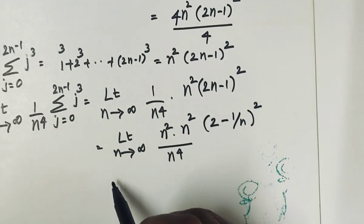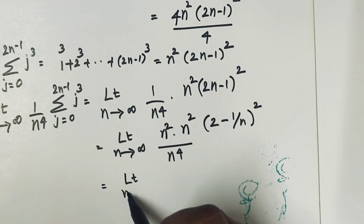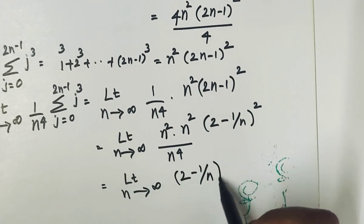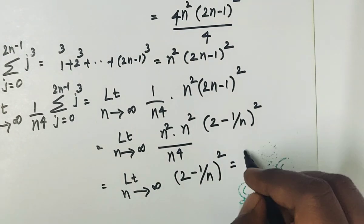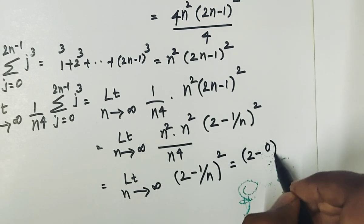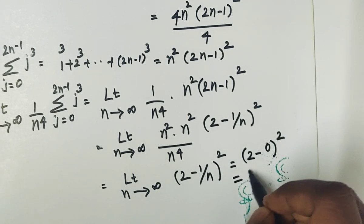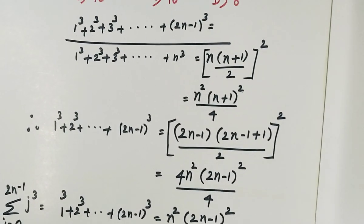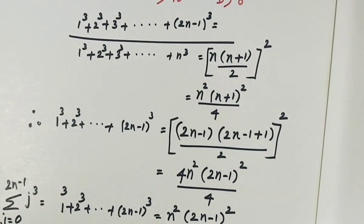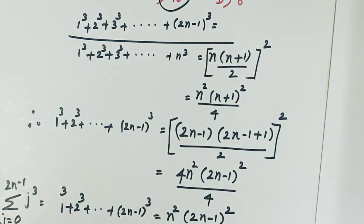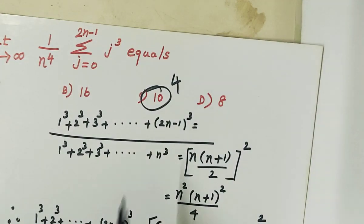After cancellation in the numerator, we get limit n tends to infinity of (2 − 1/n) whole squared. Substituting infinity: 1 by infinity equals 0, so we get (2 − 0) squared = 2 squared = 4. So the answer to this problem is 4.